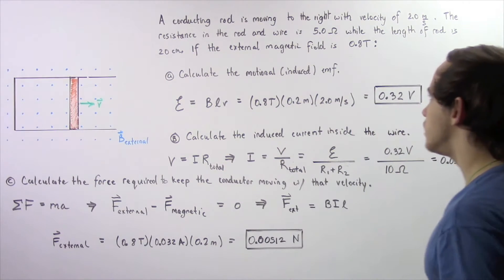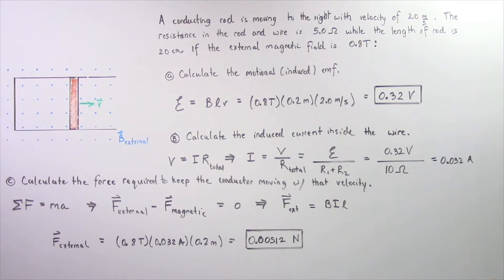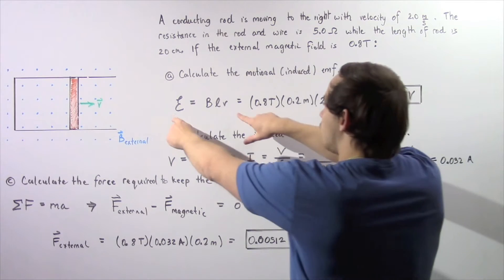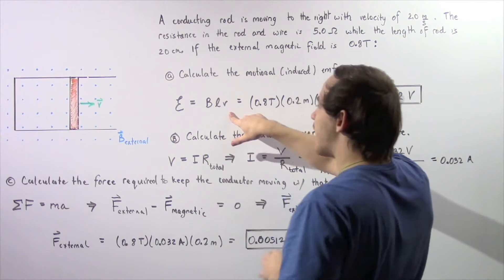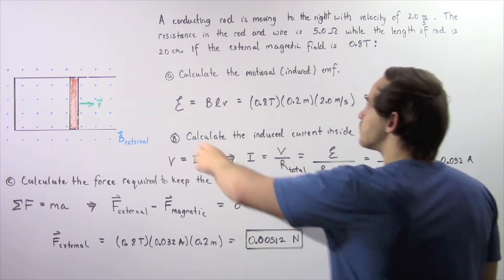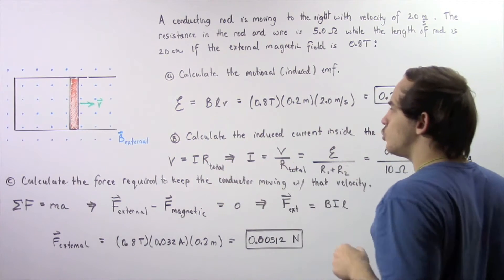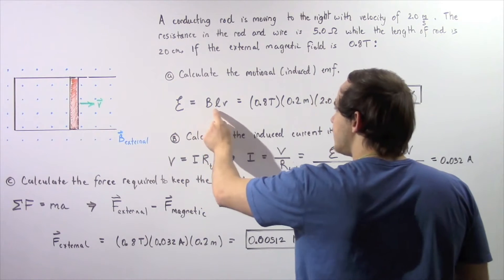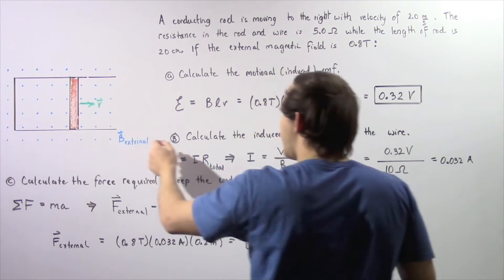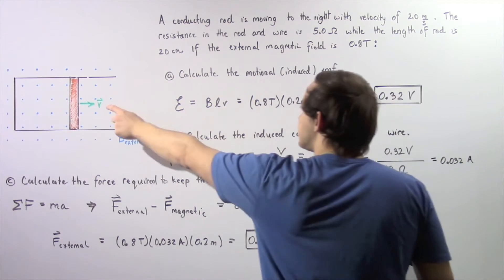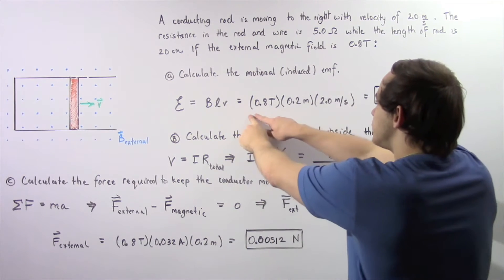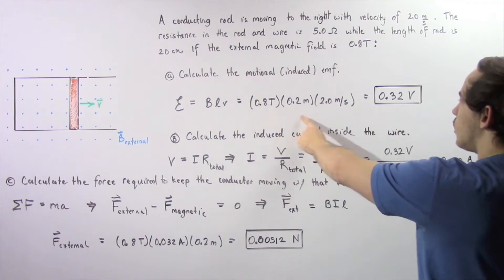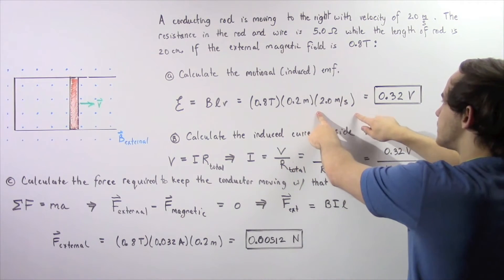To calculate our induced EMF, we simply use the following equation which we derived in a previous lecture. The motional induced EMF is equal to the product of the magnetic field B, our length of the rod L, and our velocity V. So 0.8 teslas multiplied by 0.2 meters multiplied by 2 meters per second...